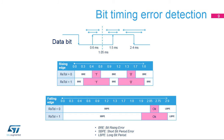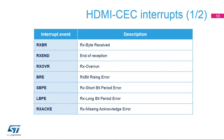A long bit period error (LBPE) is set by hardware either when a rising or falling edge is detected after the maximum RxTOL margin. Upon LBPE detection, message reception is always aborted, and an error bit is optionally generated on the CEC line if LBPE_GEN is set to 1.